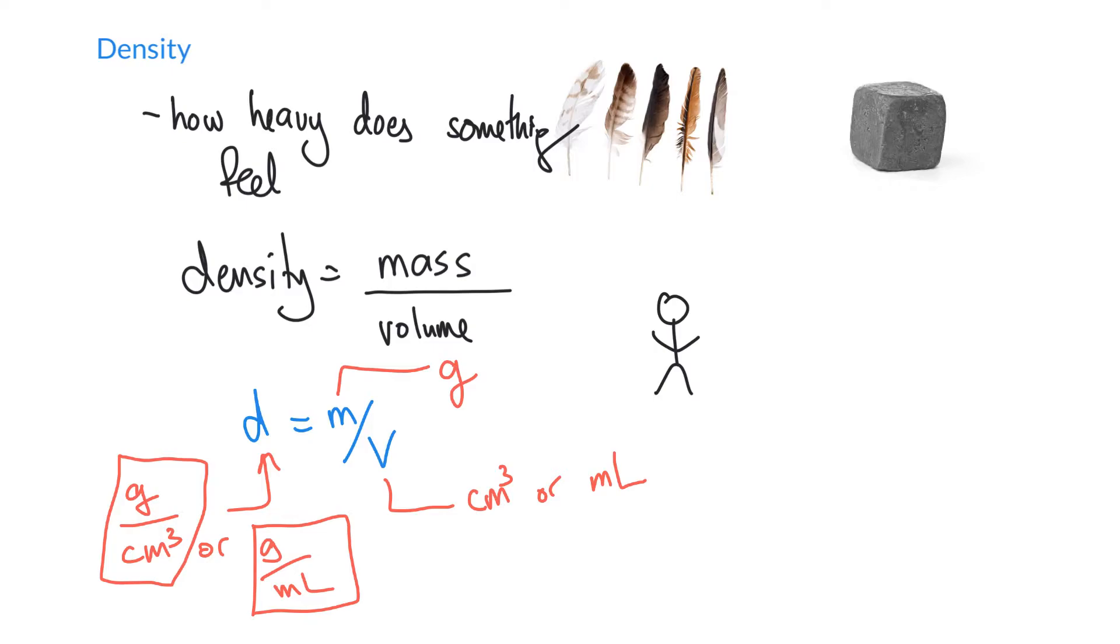Sometimes what you'll see, particularly in healthcare settings, instead of using D for density, you will often see it written as rho. And so that sort of curly P is that Greek letter rho, so R-H-O. And so sometimes you'll see it as rho equals M over V. In this class, we will ignore this way of writing it, and we'll just focus on the D way of writing density.